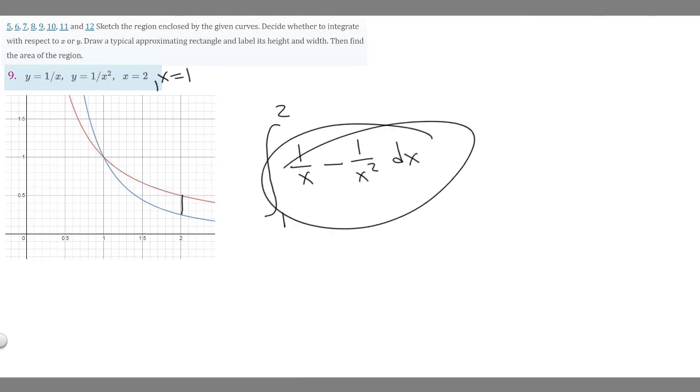And so now what we've got to do is just solve this integral. And that's going to be the area between these two curves. So we know the antiderivative of 1 over x is just the natural log of the absolute value of x. It's something you should memorize.